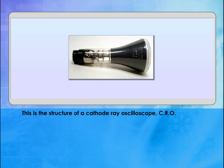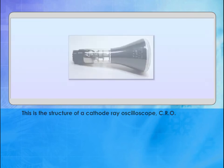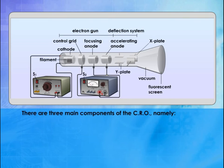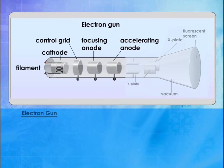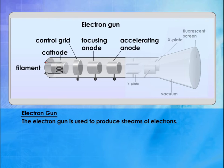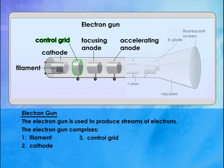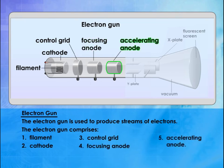This is the structure of a cathode ray oscilloscope. The electron gun comprises: 1. Filament, 2. Cathode, 3. Control grid, 4. Focusing anode, and 5. Accelerating anode.